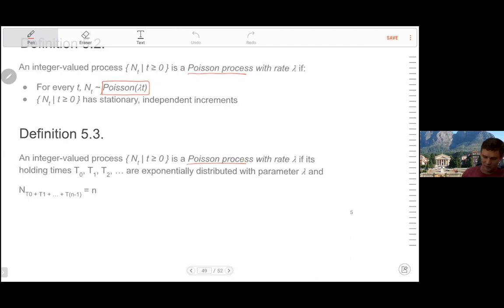An integer valued process is what's called the Poisson process. If the holding times are exponentially distributed with parameter lambda as follows. So that is the count at time t0 plus t1 plus all the way to tn. So the amount of counts we've had until that point in time. And if the holding times are exponentially distributed, we also call that a Poisson process.